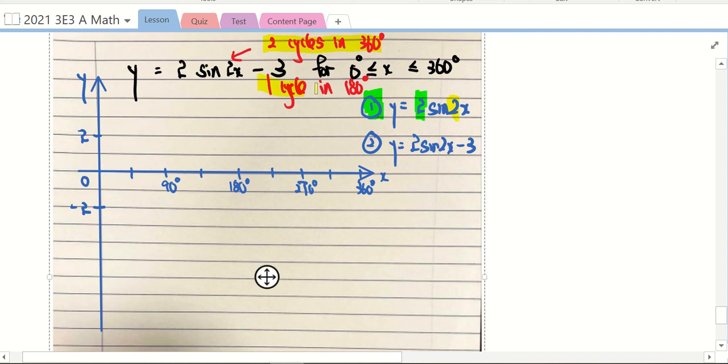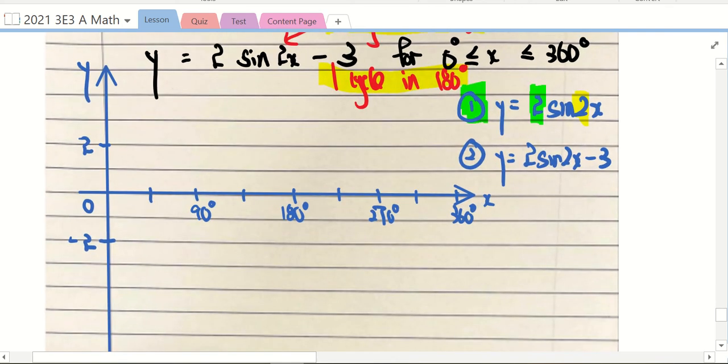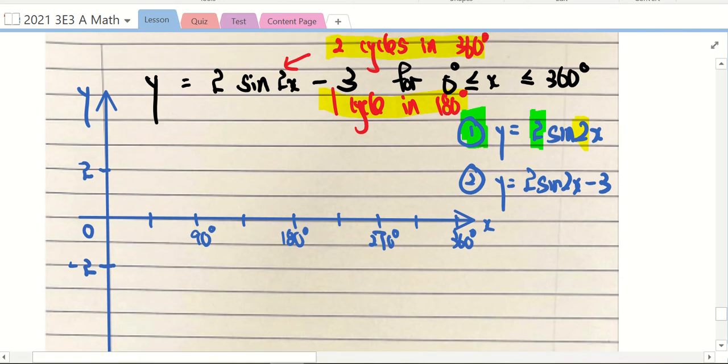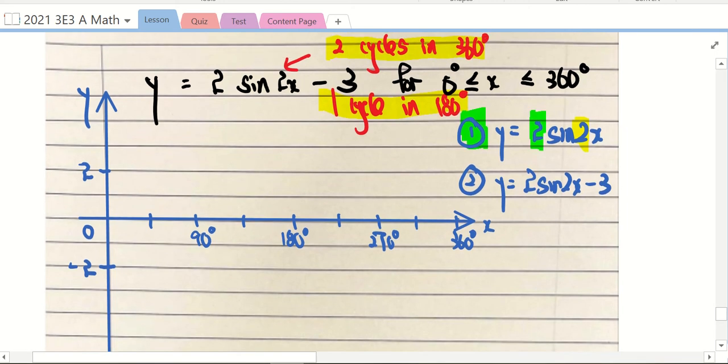This means the first cycle will end in 180, so you see what I did. In 180 degrees, I must have four intervals. The next 180 degrees up to 360, I have another four. Since this one is a sine graph, where should we start? Zero. After that, two.